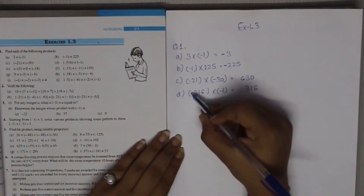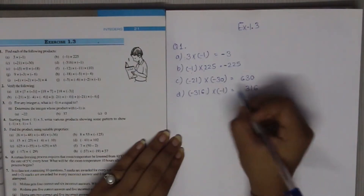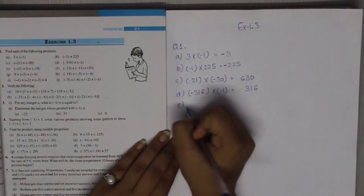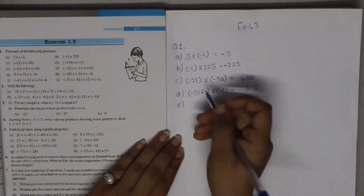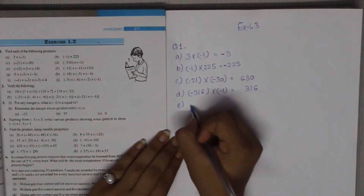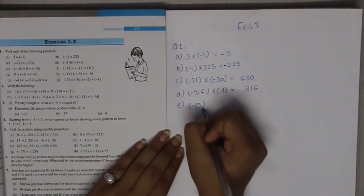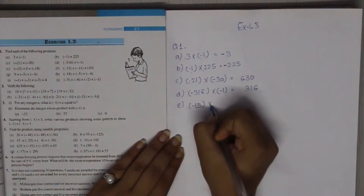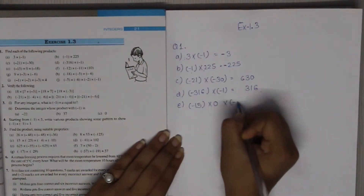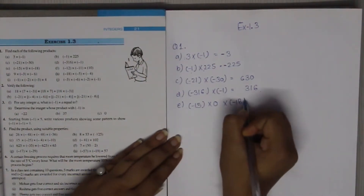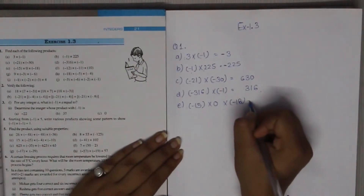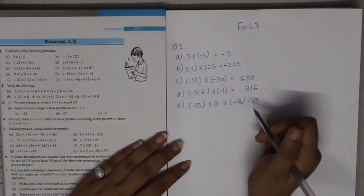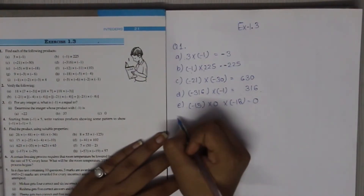Minus 316 multiplied by minus 1: if we multiply 316 with 1 we get 316, and negative times negative becomes positive, so we don't need to put the positive sign — the answer is 316. For minus 15 multiplied by 0 multiplied by minus 18, the answer is simply 0, because if we multiply 0 with any number we get 0.